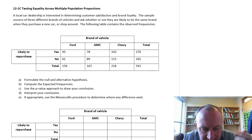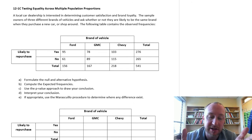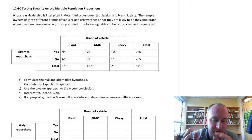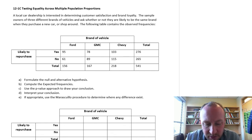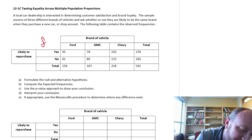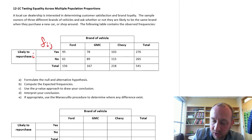Here we're looking at a local car dealership who is interested in determining customer satisfaction and brand loyalty. They sample owners of three different brands of vehicles and ask whether or not they're likely to buy the same brand when they purchase a new car or shop around. Here's our table of observed frequencies. In the notation, these are the observed frequencies F_ij, where i refers to the rows and j refers to the three columns.